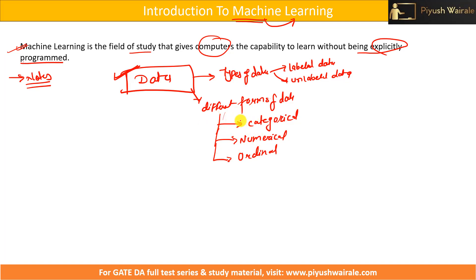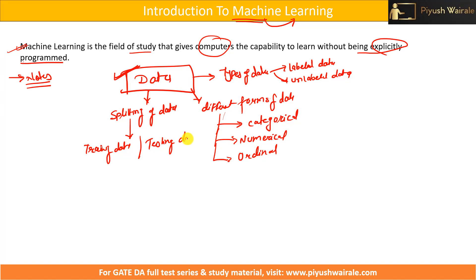This is required to understand the concept of machine learning algorithms. Then we have how to split the data — splitting of data. In that, we have training data, testing data, and validation data. What is training data, testing data, validation data — all those things we have covered in those particular notes. Just go through them. Training data is used to train the model, testing data is used to verify whether our model is giving correct results or not, and the same for validation data. Understanding of data is important from a machine learning point of view.